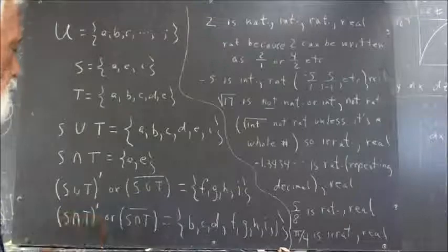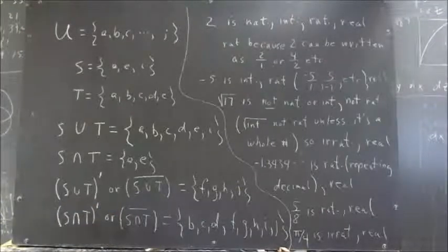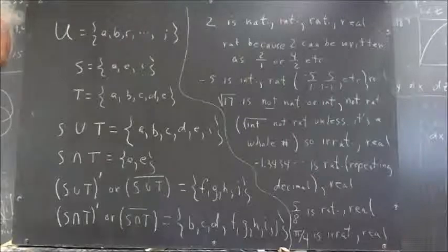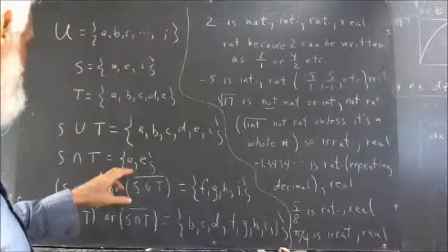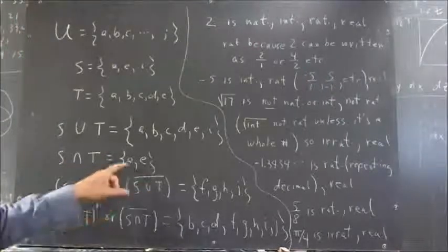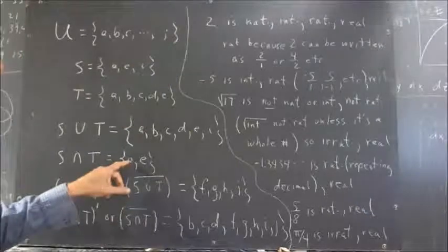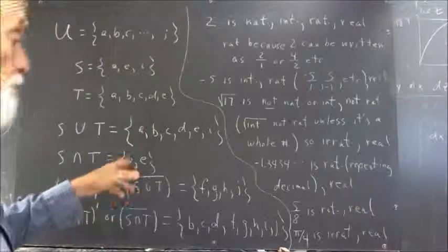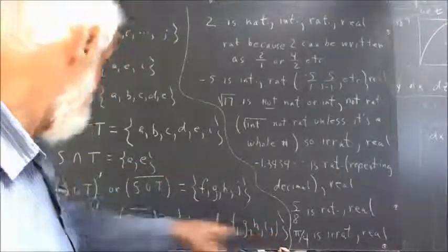Similarly, S intersection T prime or S intersection T bar is going to consist of everything in the universe that's not in S intersection T, which means it's going to be everything here except for A and E. So it won't have A, but then it's going to have B, C, and D. It won't have E, but then it's going to have F, G, H, I, and J.